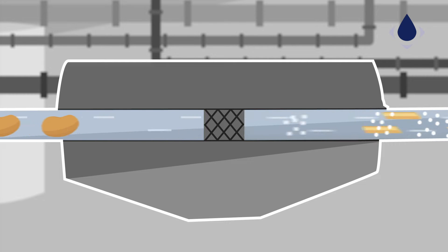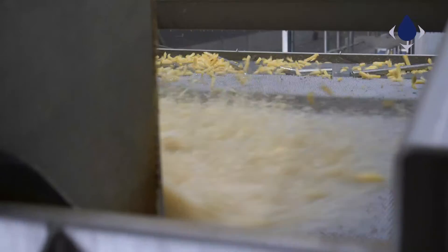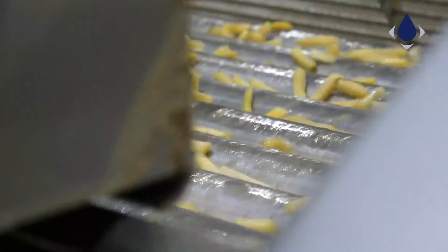During this cutting process, starch, small pieces of potato and fibers are released in the cutting water system. French fries are washed to clean them from starch and other particles.